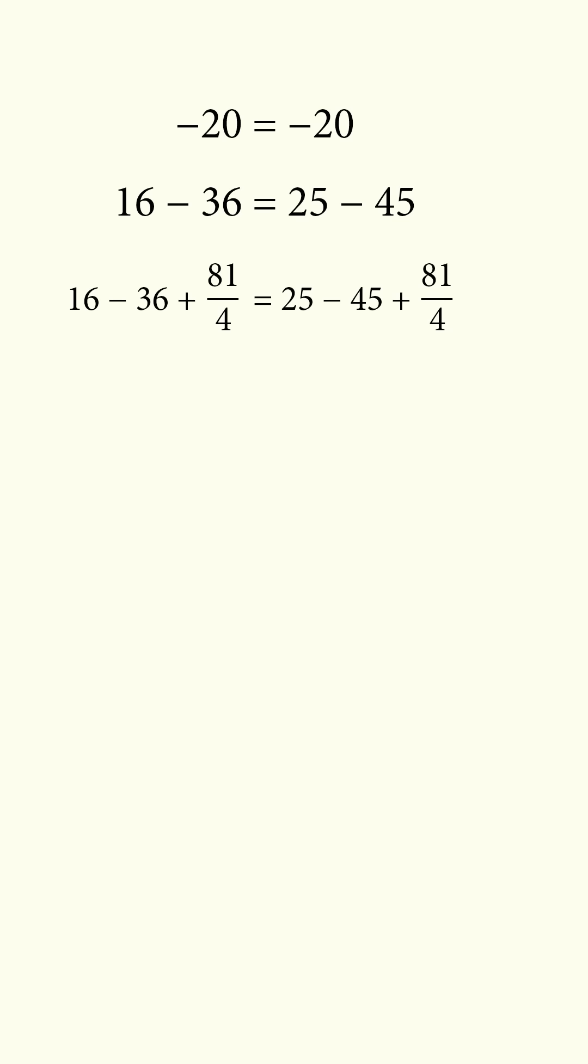Add 81 over 4 to both sides. Write the equation in terms of factors. Then factor the left-hand side as the square of 4 minus 9 over 2, and the right-hand side as the square of 5 minus 9 over 2.